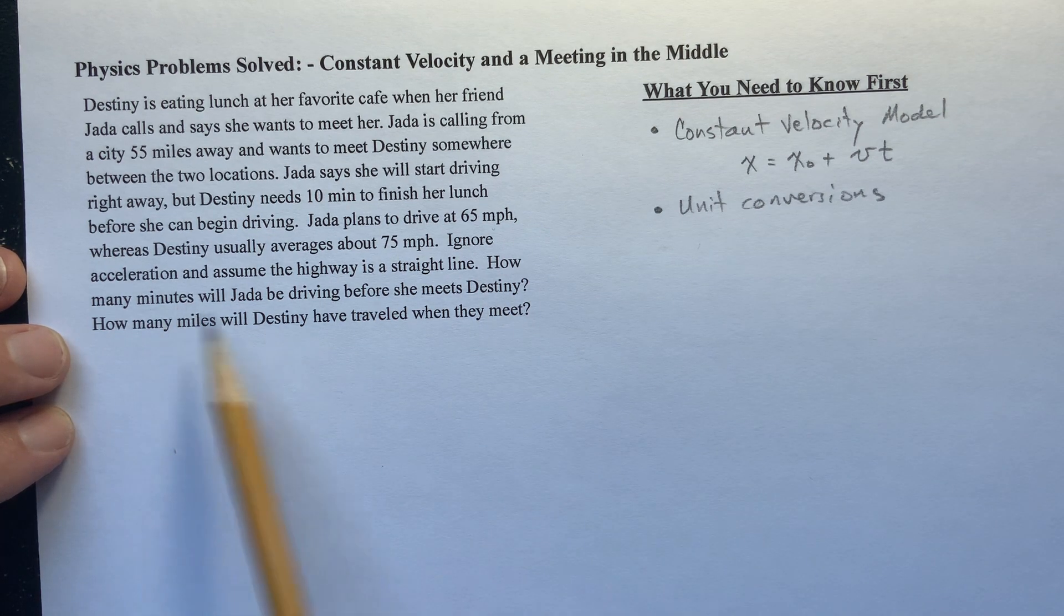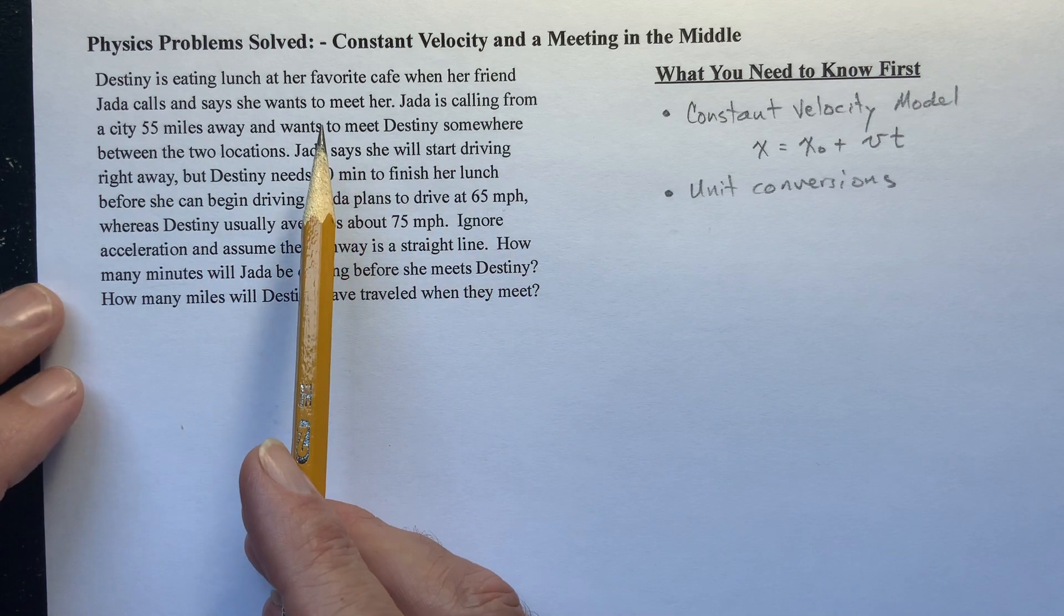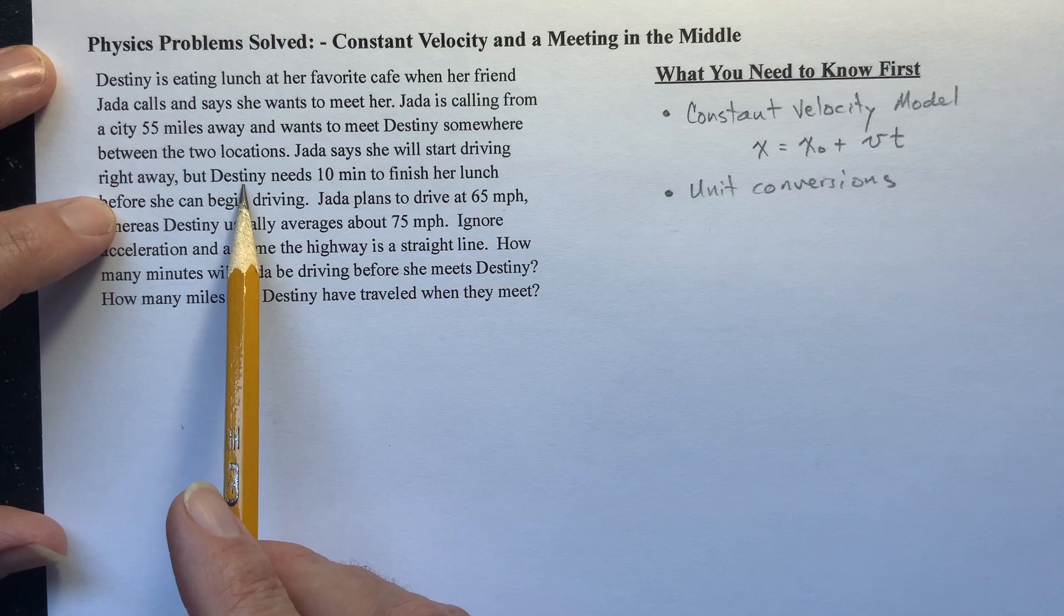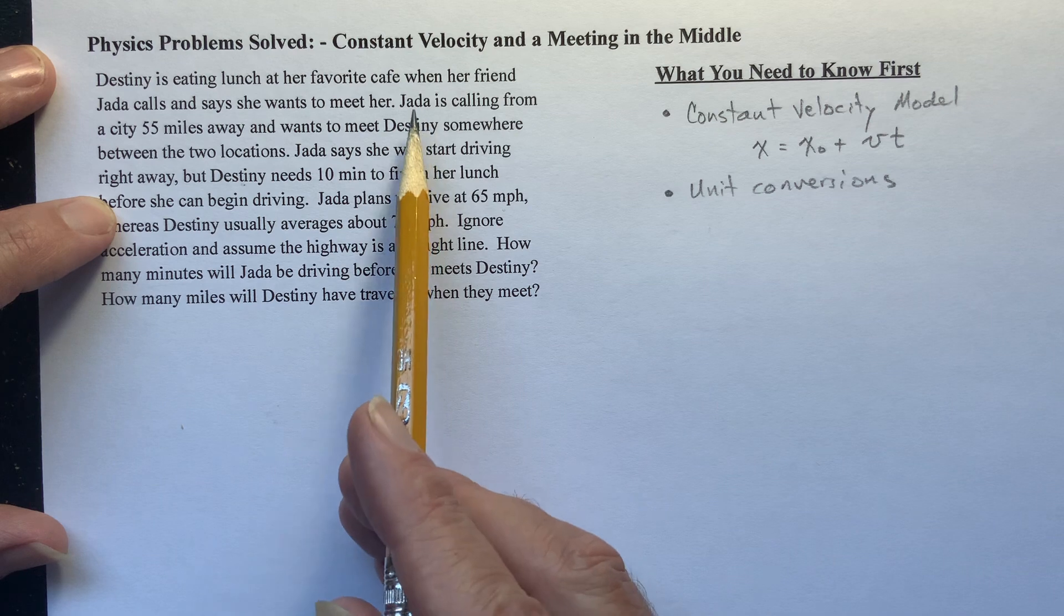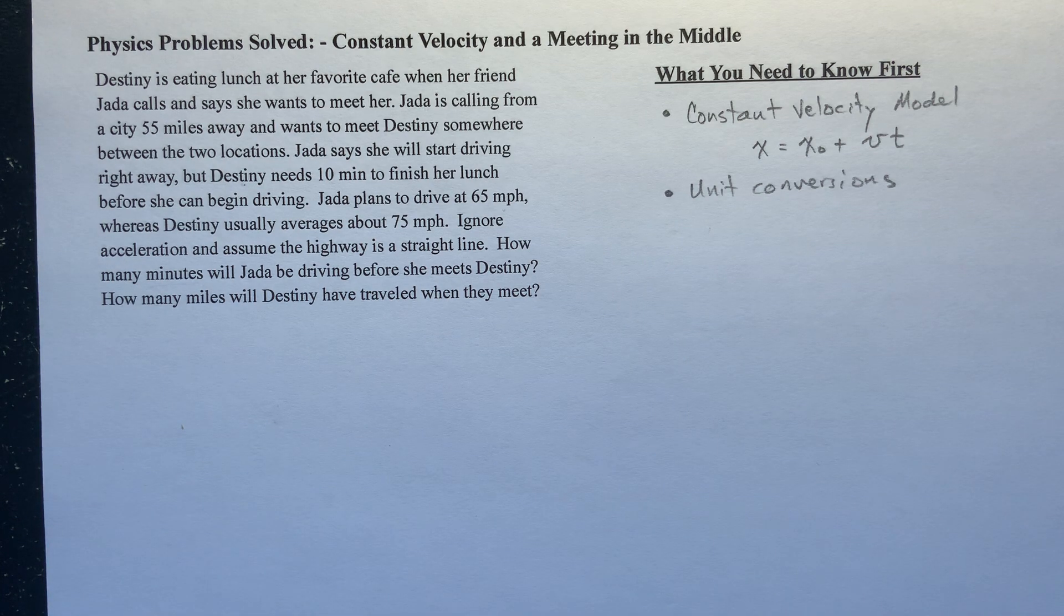And here notice that time is measured in minutes. So we're going to... Now this is a fairly common type of problem that you'll see and sometimes it'll even have acceleration in it, you know. But where one of our actors, in this case Destiny, is not going to start motion at the same time that the other actor is in this case Jada. So Jada's going to start moving right away and Destiny's just going to sit there for 10 minutes. So and then Destiny's going to take off and then they're going to meet. So there's really kind of two time intervals to worry about.